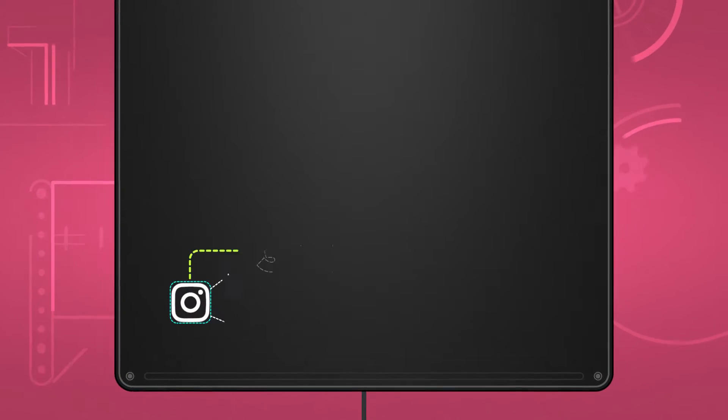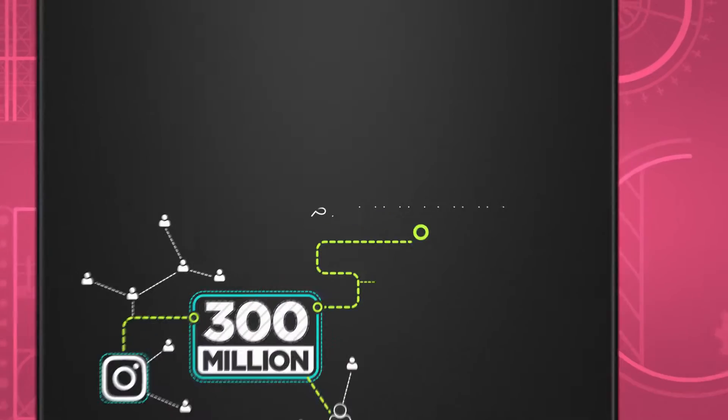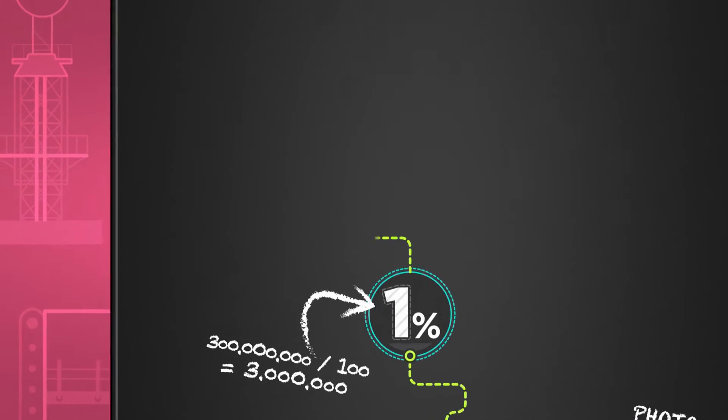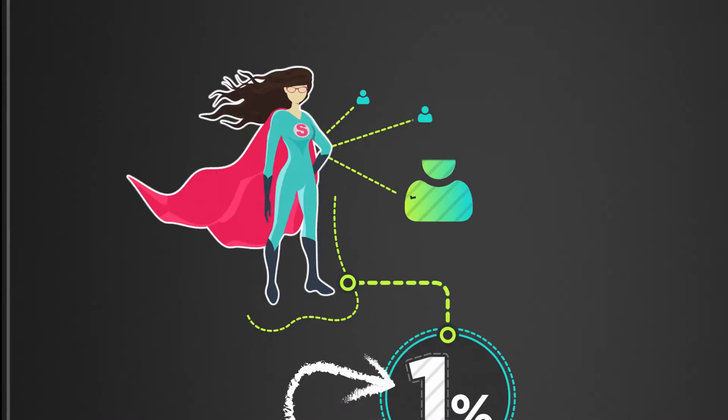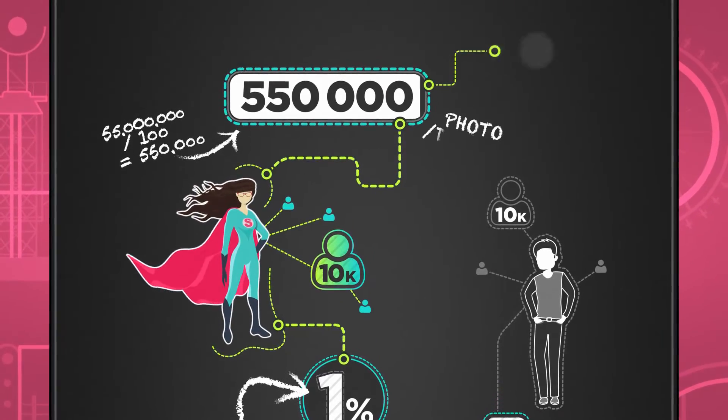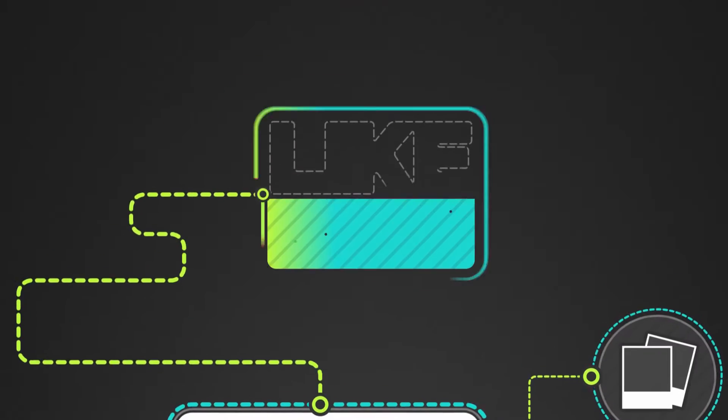Instagram has around 300 million users and 55 million photos are posted every day. One percent of those photos are uploaded by users like Sophie or micro users, which is more than 500,000 posts by real opinion leaders like you.